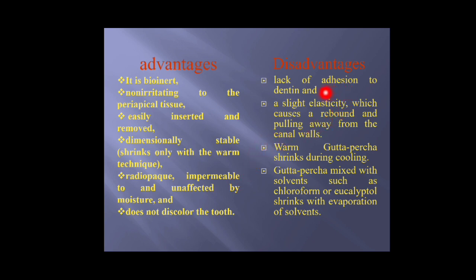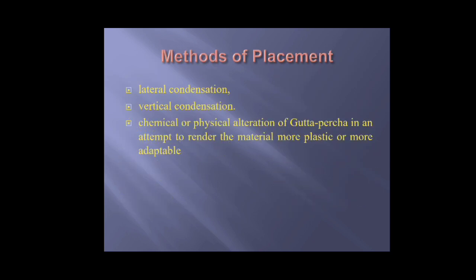At the same time, gutta-percha has the disadvantage of lack of sealing and lack of adherence to dentine — so it can pull away and rebound from the dentine wall, as it is an elastic material. If modified by heat it may undergo cooling shrinkage, or if mixed with solvents, after evaporation of the solvent it can shrink in size.